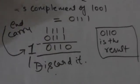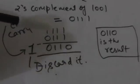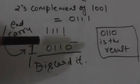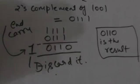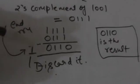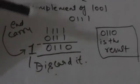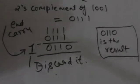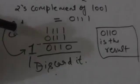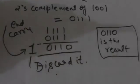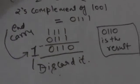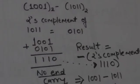We will discard the end carry. What is left in the sum after discarding the end carry is the desired result. Here what is left is 0 1 1 0. So 0110 is the desired result.